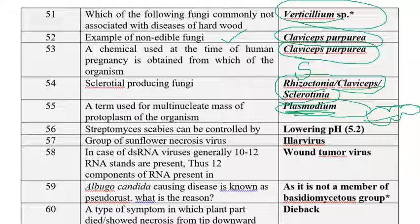Streptomyces scab of potato can be controlled by reducing the pH to 5.2. Club root of cabbage is very severe at pH 5.5 and can be controlled at pH 7.6 to 7.8. Potato scab (Streptomyces) is the opposite — it can be controlled at pH 5.2 and is severe at pH 8.0.